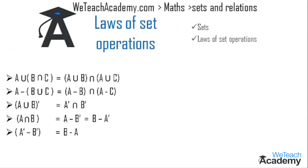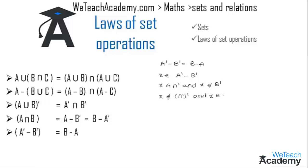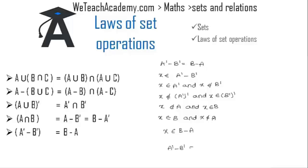The fifth law is: A complement minus B complement equals B minus A. Let x belong to A complement minus B complement, so x belongs to A complement and x does not belong to B complement. This means x does not belong to A complement's complement, and x belongs to B complement's complement, which implies x does not belong to A and x belongs to B. Writing this as x belongs to B and x does not belong to A gives x belongs to B minus A. Therefore A complement minus B complement equals B minus A.